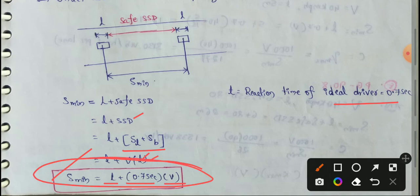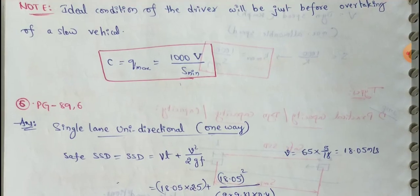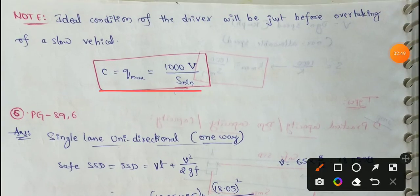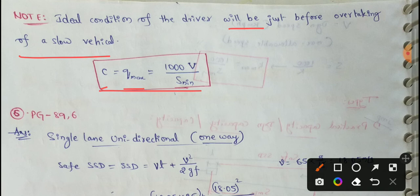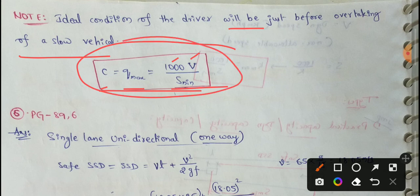The final capacity formula is: C equals Q maximum equals 1000 V divided by S minimum. Here C means traffic capacity under ideal conditions, and Q maximum means the maximum traffic volume. We substitute the S minimum value into this formula to calculate the ideal or basic traffic capacity.